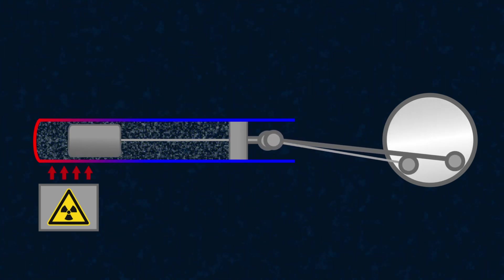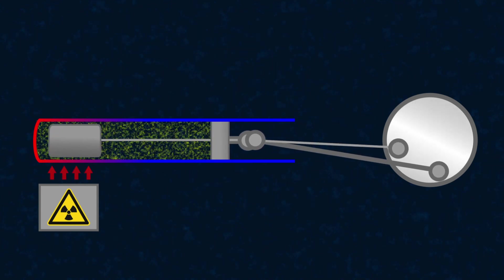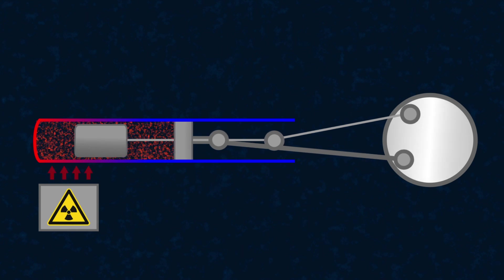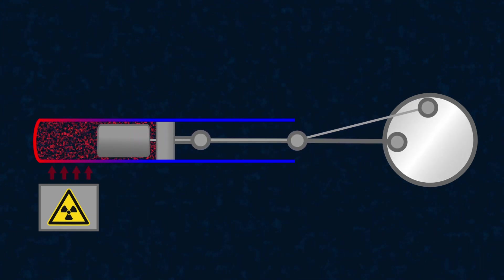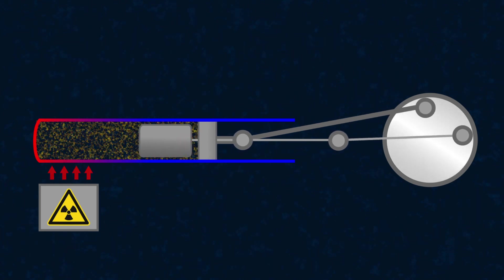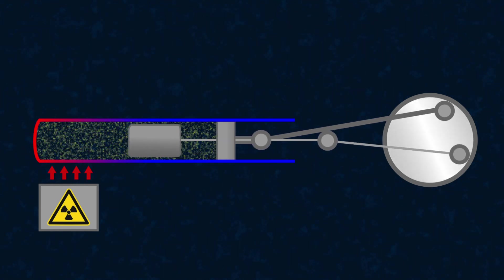The heat source heats the gas, increasing its pressure, and the gas begins to expand, flowing around the displacer piston and pushing the working piston to the right. As the working piston moves, it rotates the flywheel, which causes the displacer piston to move to the left.